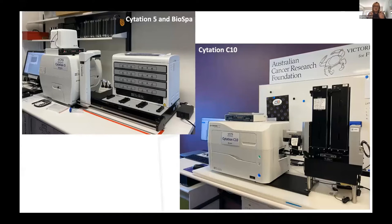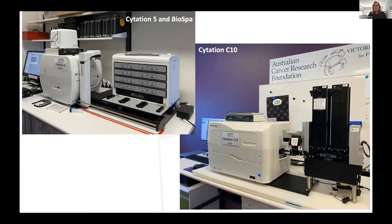We loved our Citation 3 so much that we moved it upstairs and justified getting a Citation 5 for 3D imaging — and that went so well that we then got the Citation CX10. So we now have two primarily serving as our basic and sophisticated plate readers, but more than anything our 3D platform.